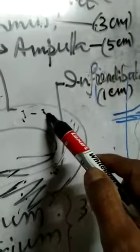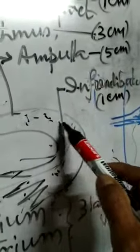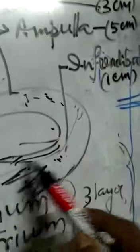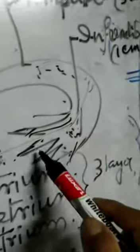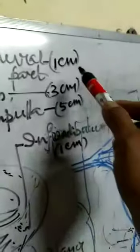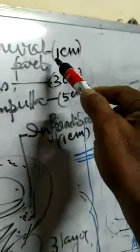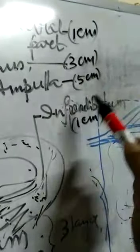The isthmus is 3 centimeters in length. The ampulla is almost 5 centimeters and is the most dilated part of the uterine tube. The funnel-shaped portion is known as the infundibulum, and this one is the fimbria. So the measurements are: intramural part 1 centimeter, isthmus 3 centimeters, ampulla 5 centimeters, and infundibulum 1 centimeter.